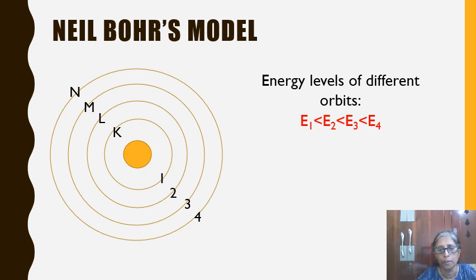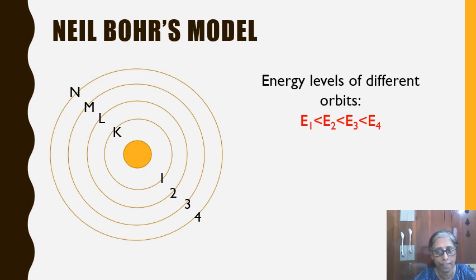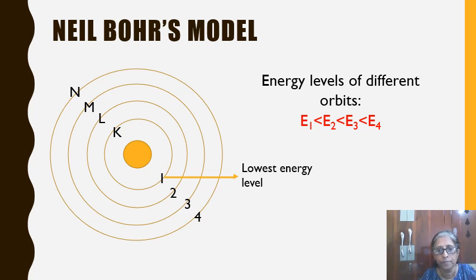If you look here, it's given E1 less than E2 less than E3, which means that the energy level of 1 is less than energy level of 2 and so on. Energy level 1 has the lowest energy and 4 has higher than that.